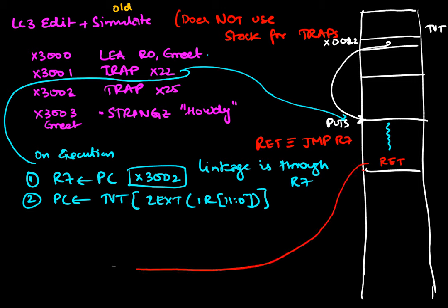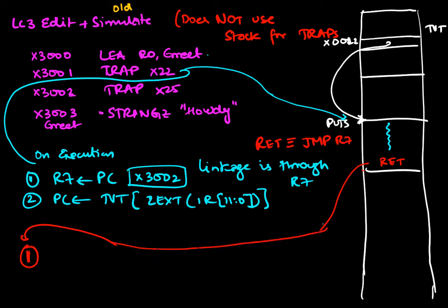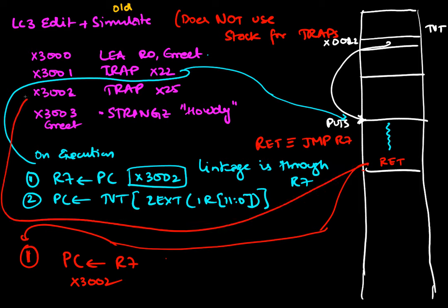On return, the single step performed by RET is simply to set the PC back to R7, so PC is restored to x3002, and execution continues from that line.